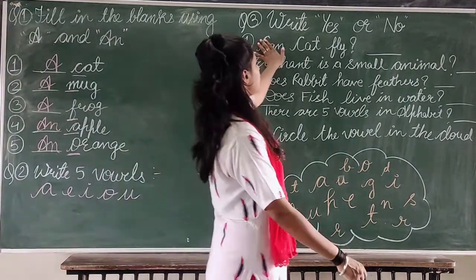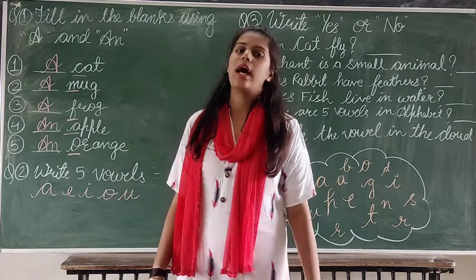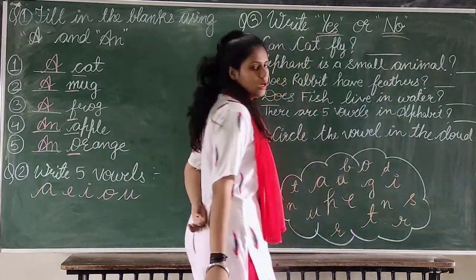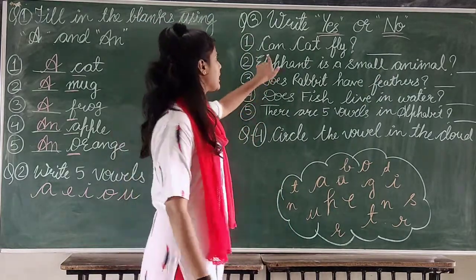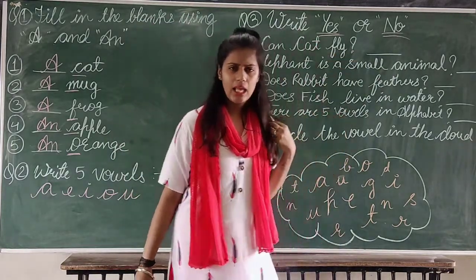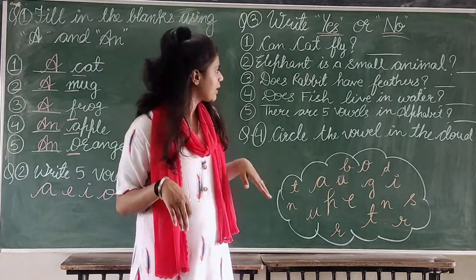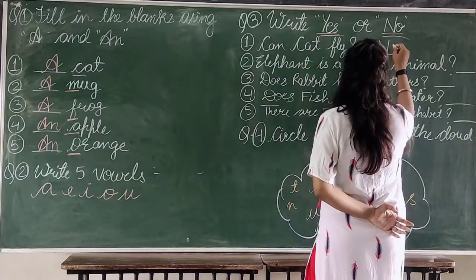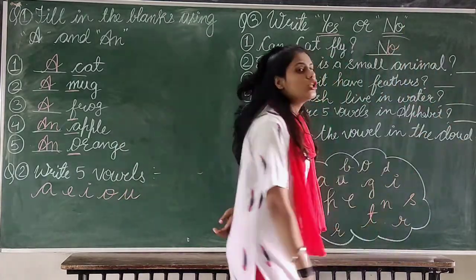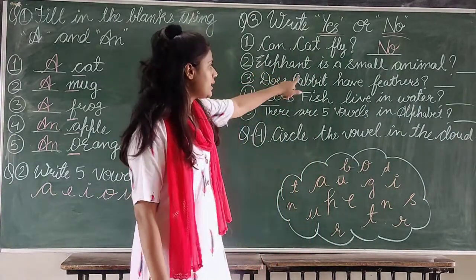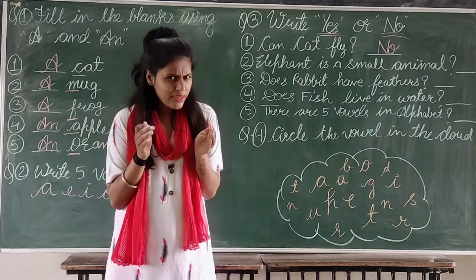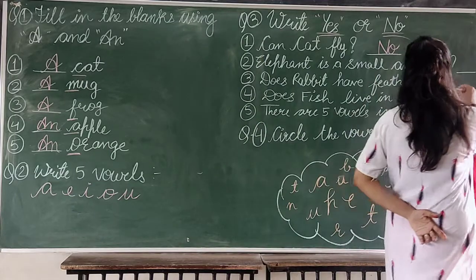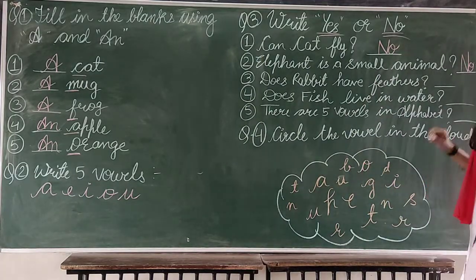Now question number three is: write yes or no. You have to write yes or no — either yes or no. So tell me: can a can fly? No. So you have to write here: N-O, no. Next: is an alligator a small animal? Is the alligator a small animal? No. So you have to write here: N-O, no.